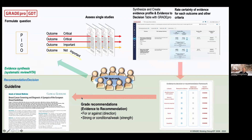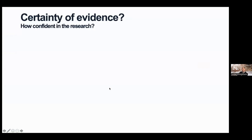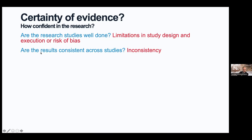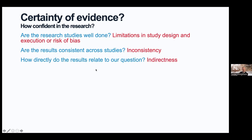Reason number two: GRADE is a structured approach. The certainty of the evidence assessment follows specific domains. For lay audiences, we phrase the questions that influence certainty as follows: First, are the research studies well done? This relates to limitations in study design and execution — or in proper terminology, risk of bias. Next, are the results consistent across studies when they should be? Inconsistency may influence how confident you can be in the evidence.